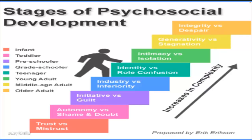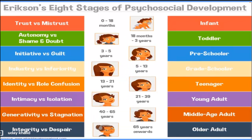In summary, the psychosocial theory focuses on social interaction rather than on libido and sexual drive. It is about the experience of interaction with society — that is why it is called the psychosocial theory. According to Erik Erikson, the eight stages are: Trust vs. Mistrust, Autonomy vs. Shame and Doubt, Initiative vs. Guilt, Industry vs. Inferiority, Identity vs. Role Confusion, Intimacy vs. Isolation, Generativity vs. Stagnation, and Integrity vs. Despair.